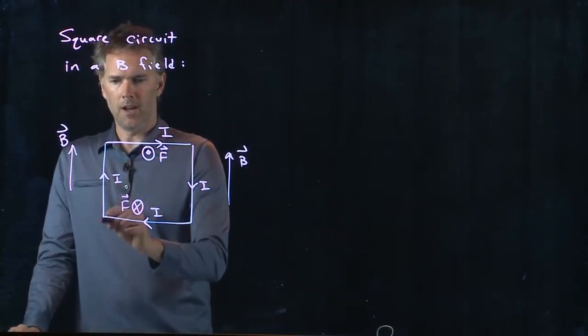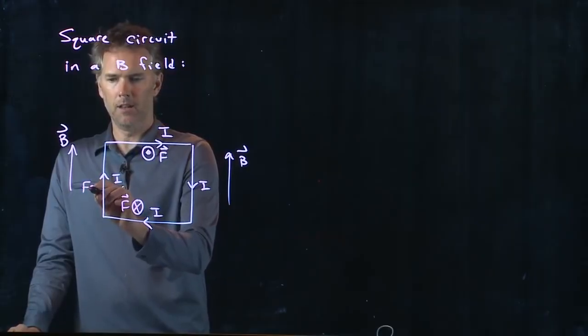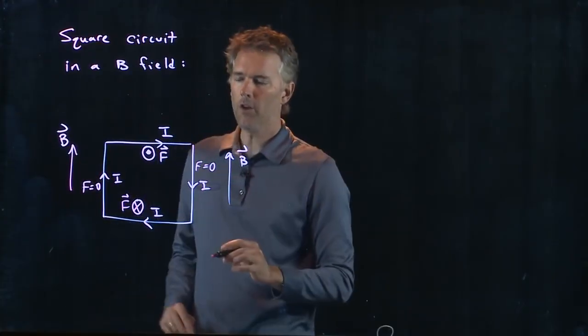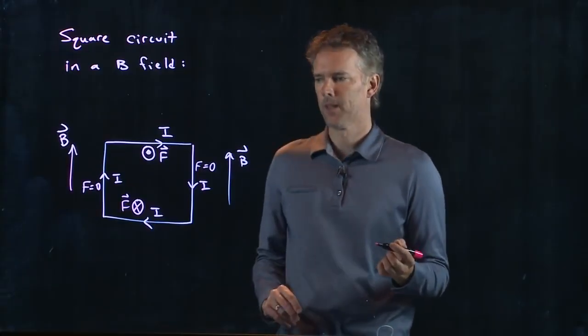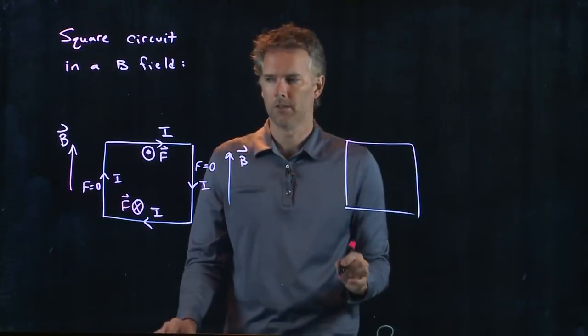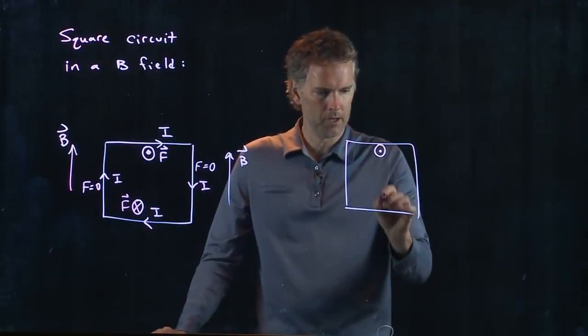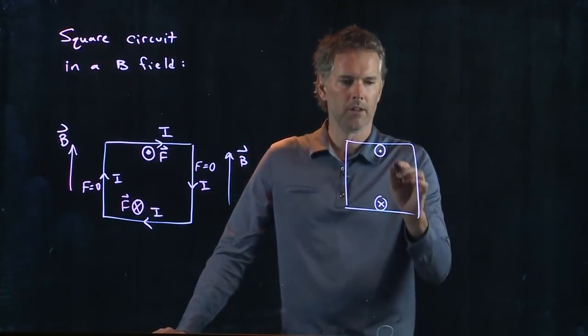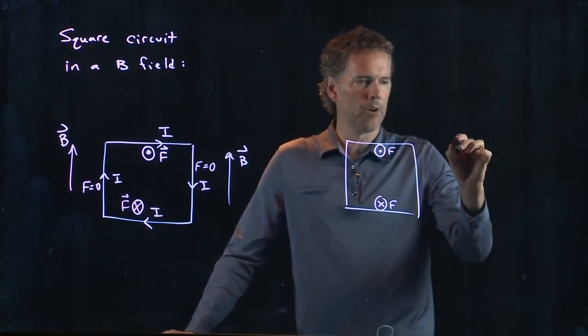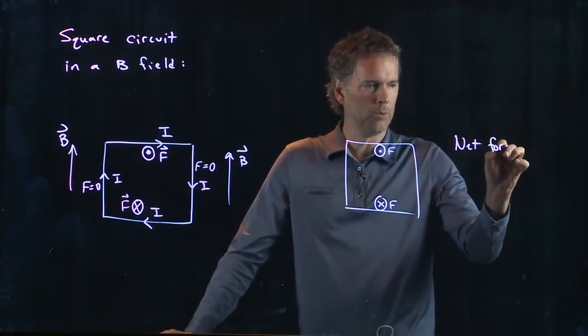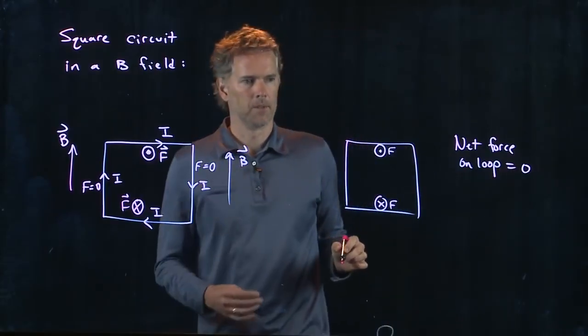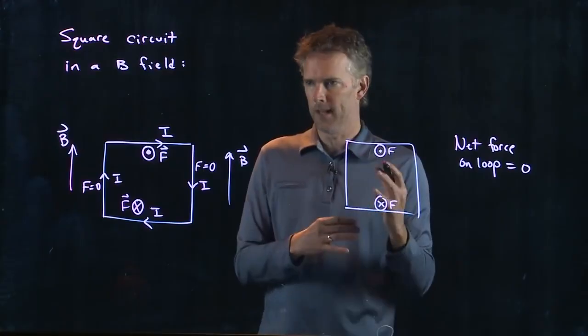What about the force on either side? The force on this side is of course zero because they're parallel. The force on this side is also zero because they're anti-parallel. So that entire square has a force up here going out and a force down on that side going into the screen. The net force on this whole loop is equal to zero. The whole loop doesn't move up or down or left or right.